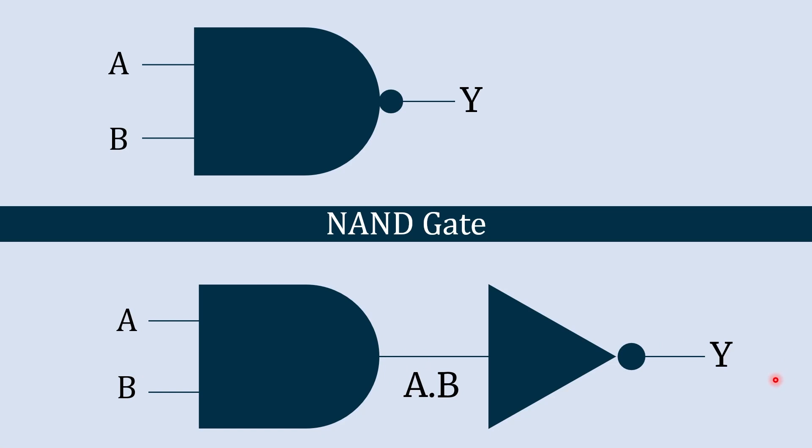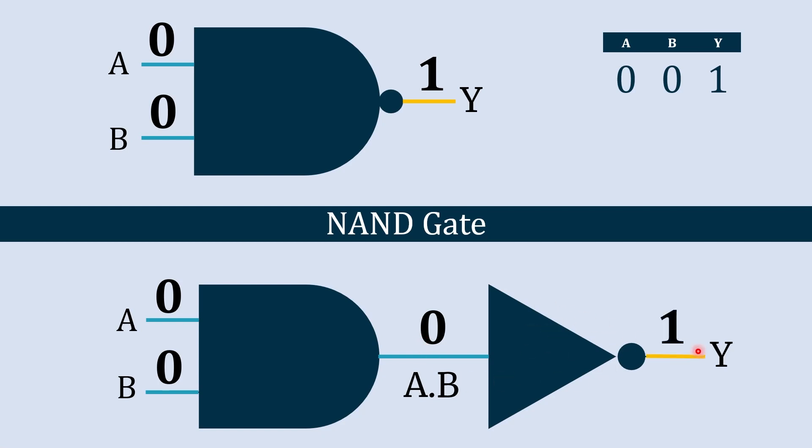So when we give two inputs, both of them are zero, the output of this NAND gate is one. How does this happen? We'll understand here. When both the inputs to the AND gate are zero, the output is also zero. But when the input to this NOT gate is zero, the output becomes one. And that is how you get one in output when both the inputs are zero.